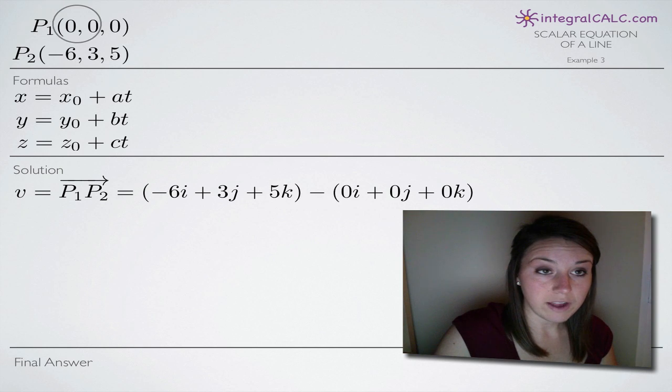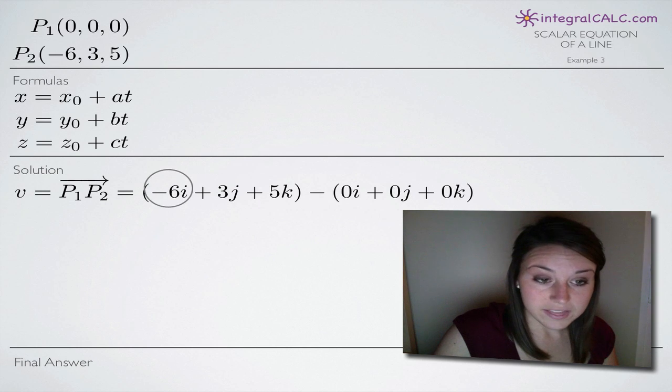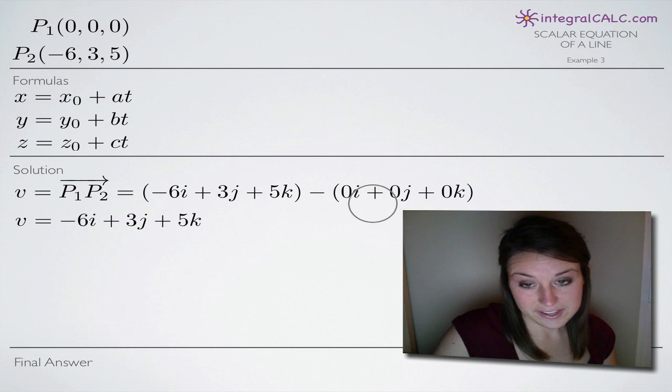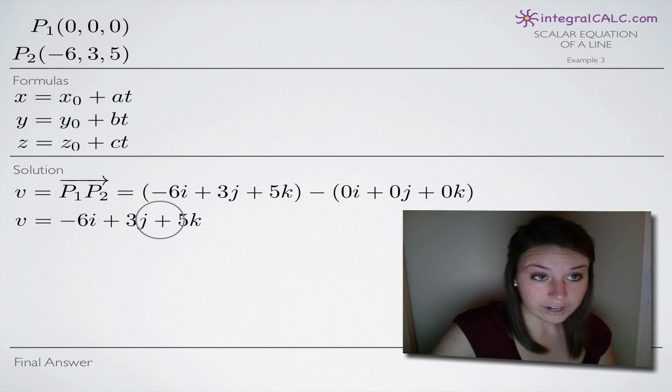And then from that we subtract our P₁ values. Again, making x, y, and z coefficients on i, j, and k respectively. So we set this up in this way. This is going to give us the vector v. And now we just subtract it. In this case it's easy because we have 0, 0, and 0 for the three terms here. So we're left with just the first term, -6i + 3j + 5k. And that's our vector.